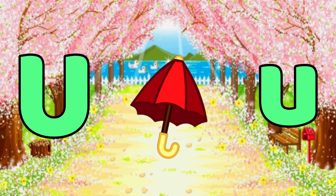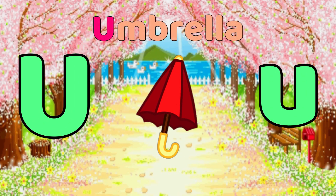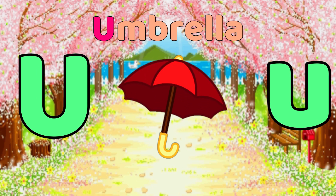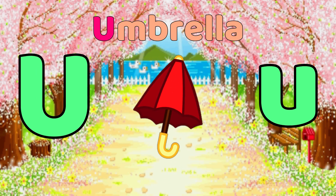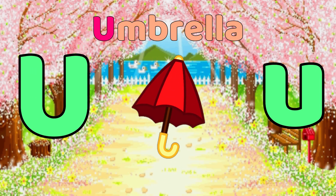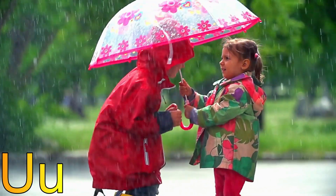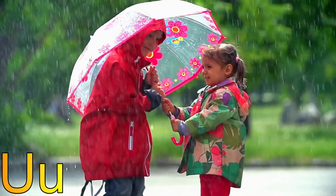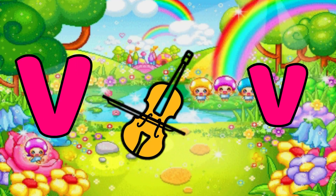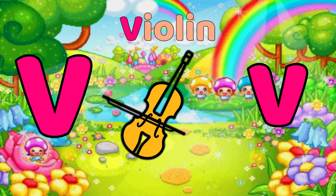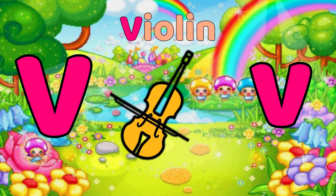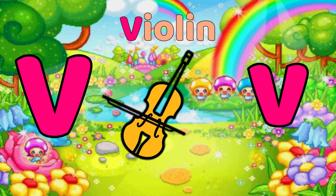U is for Umbrella. U, Umbrella, U, Umbrella. V is for Violin. V, Violin.